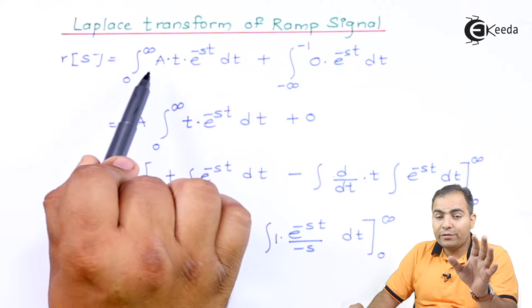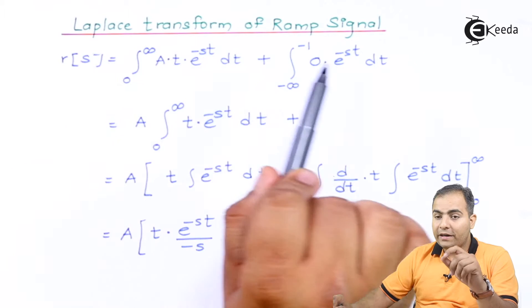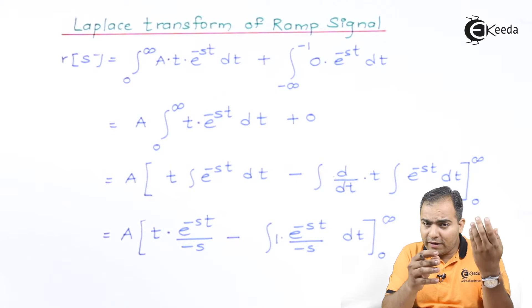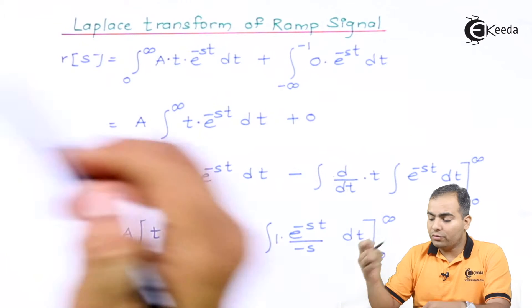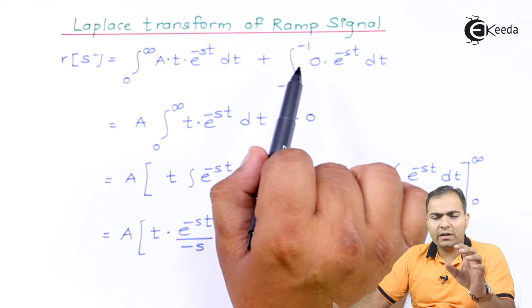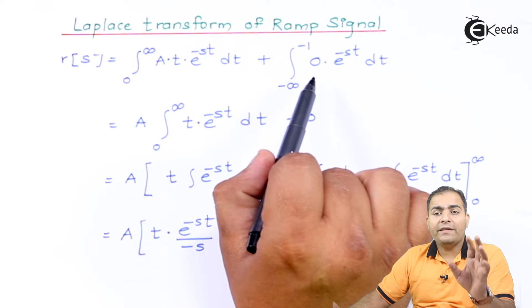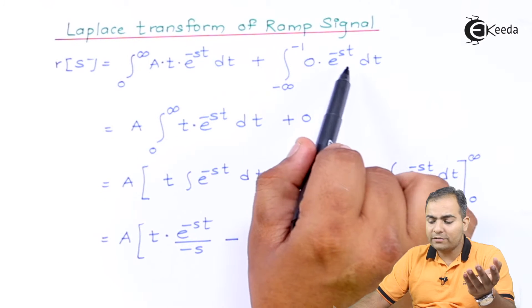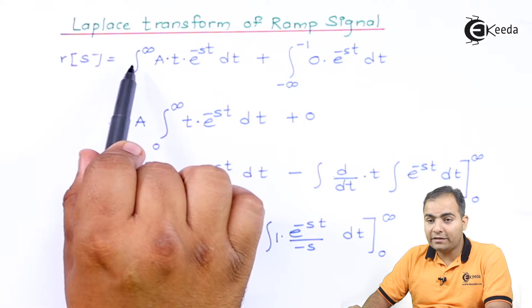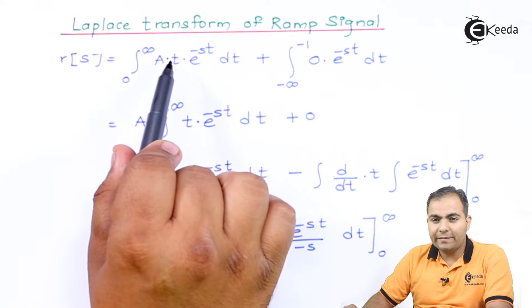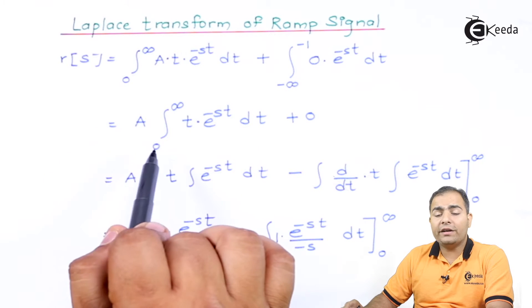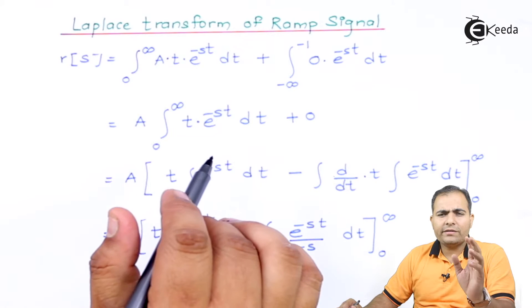The ramp wave has amplitude a·t only when t goes from zero to infinity; it has amplitude zero when t is less than zero. The left-hand portion of the integral (minus infinity to zero) becomes zero entirely. Since 'a' is a constant, we take it outside the integration, leaving the integral of t·e^(−st) dt from zero to infinity. In mathematics we apply the LIATE rule to solve this.